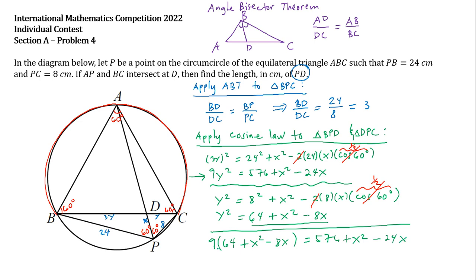So let's apply the distributive property on the left-hand side. We will have 576 plus 9X squared minus 72X, and then this is equal to 576 plus X squared minus 24X.